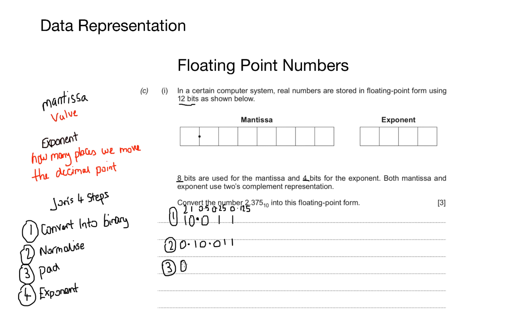Step three is to pad my number with the required number of bits for the mantissa. And I get that from my question because it originally stated that eight bits are used for the mantissa. So currently I've used one, two, three, four, five, six bits. So all I need to do is add two zeros on the end of my number. And don't forget, always pad on the right hand side.